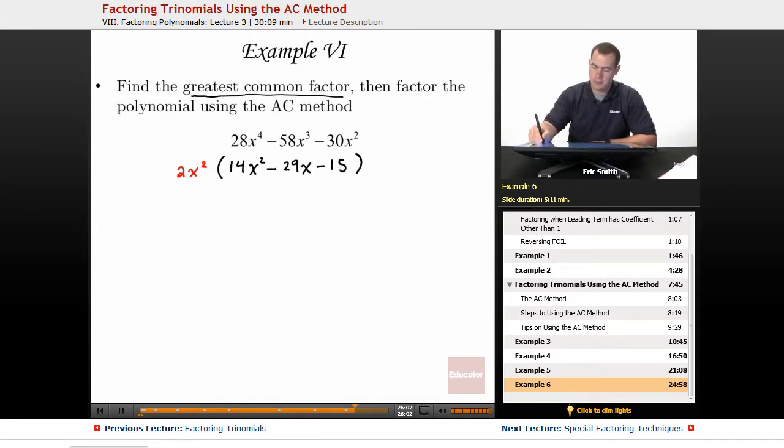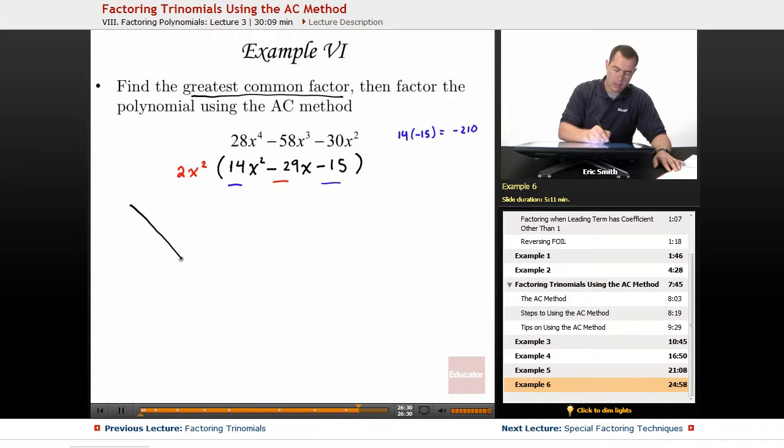So from here, I'm going to take its A and C term and I'm going to multiply those together. Now these ones are quite large, but we can do it. 14 times a negative 15, that gives me a negative 210, quite large. So I need two numbers that multiply to give me a negative 210, but they add to be a negative 29.